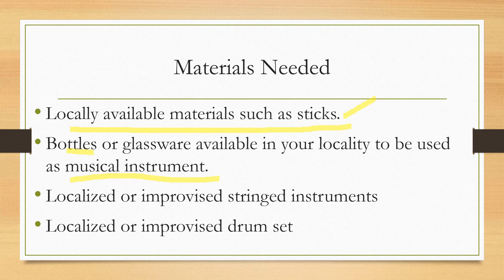If you want to make a guitar, you can improvise a string instrument. You can also improvise a drum set. Those are the materials needed for this project, the Big Time Gig.